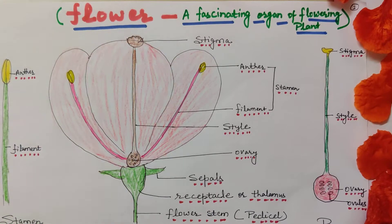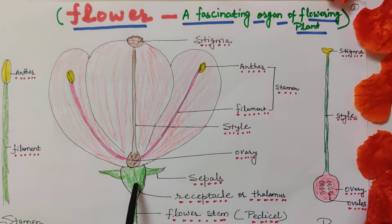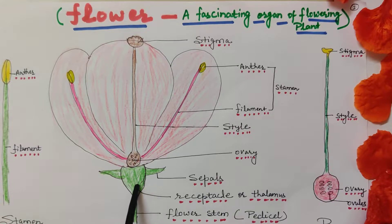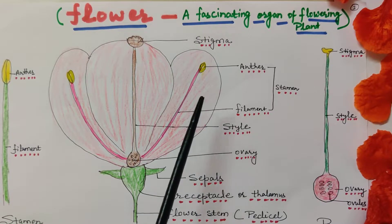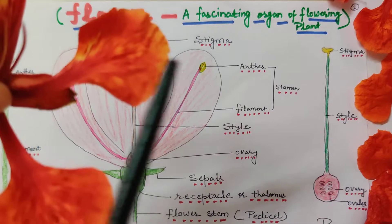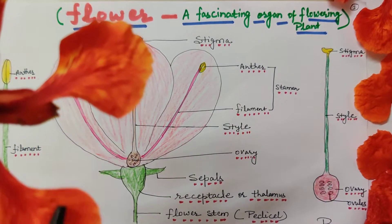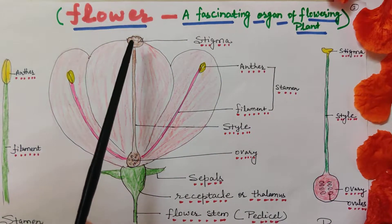Structure of flower and its parts. The basal part to which other floral appendages are attached is called the receptacle or thalamus. The green leaf-like structures are called sepals. The colorful part of a flower is called petals. The middle part is called pistil or carpel, which is the female reproductive part of a flower.